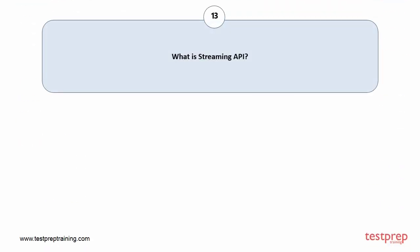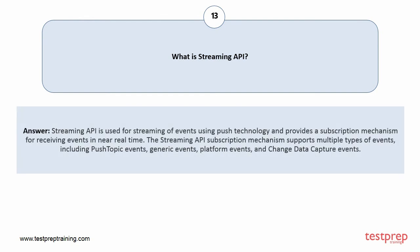Question number thirteen: what is streaming API? Streaming API is used for streaming of events using push technology and provides a subscription mechanism for receiving events in near real-time. The streaming API subscription mechanism supports multiple types of events, including push topic events, generic events, platform events, and change data capture events.